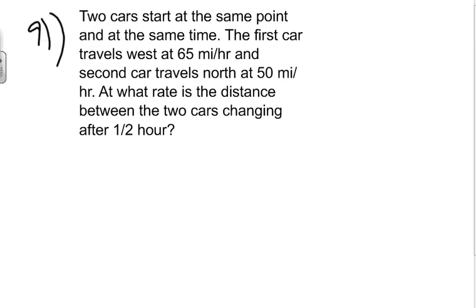We have one more related rate problem to do, and this one involves two cars - a very popular problem where we have two different things changing during a period of time. Two cars start at the same point at the same time. The first car travels west at 65 miles per hour.